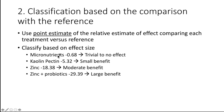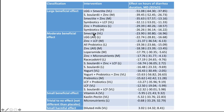Looking at the actual estimates, classification based on the comparison with the reference is undertaken using the point estimate of the relative estimate. For example, for micronutrients, a decrease of 0.68 hours could be considered trivial or no effect. Smectite and pectin, five hours — small benefit reduction. Zinc, 18 hours — moderate benefit. And zinc and probiotics, more than 24 hours — a large benefit based on that classification. All interventions can be listed in this way, focusing on the actual point estimates.